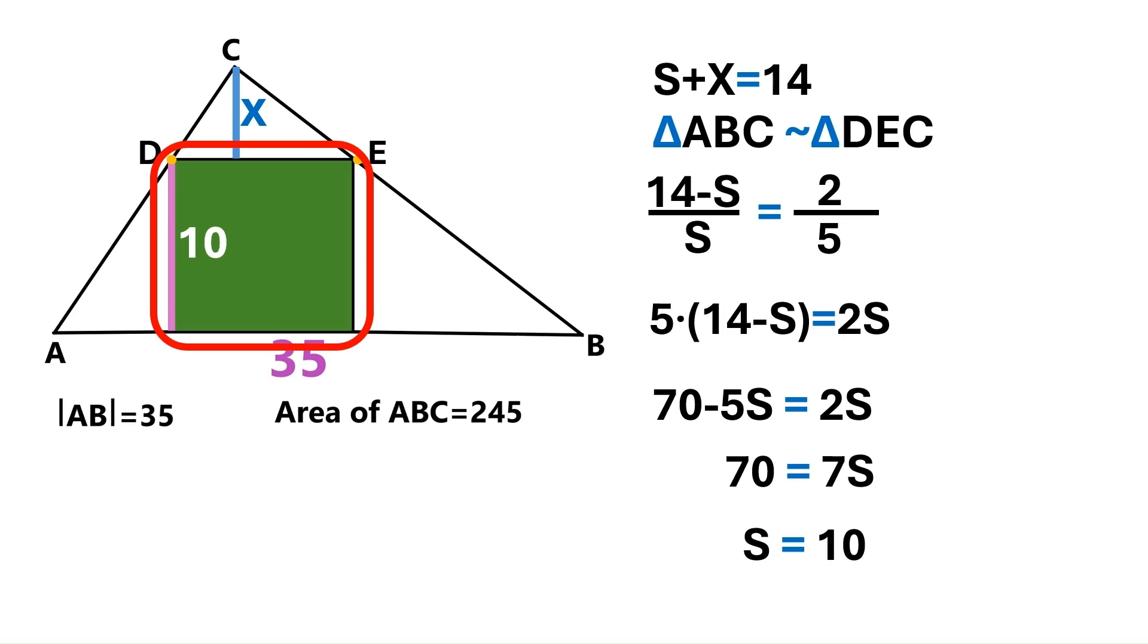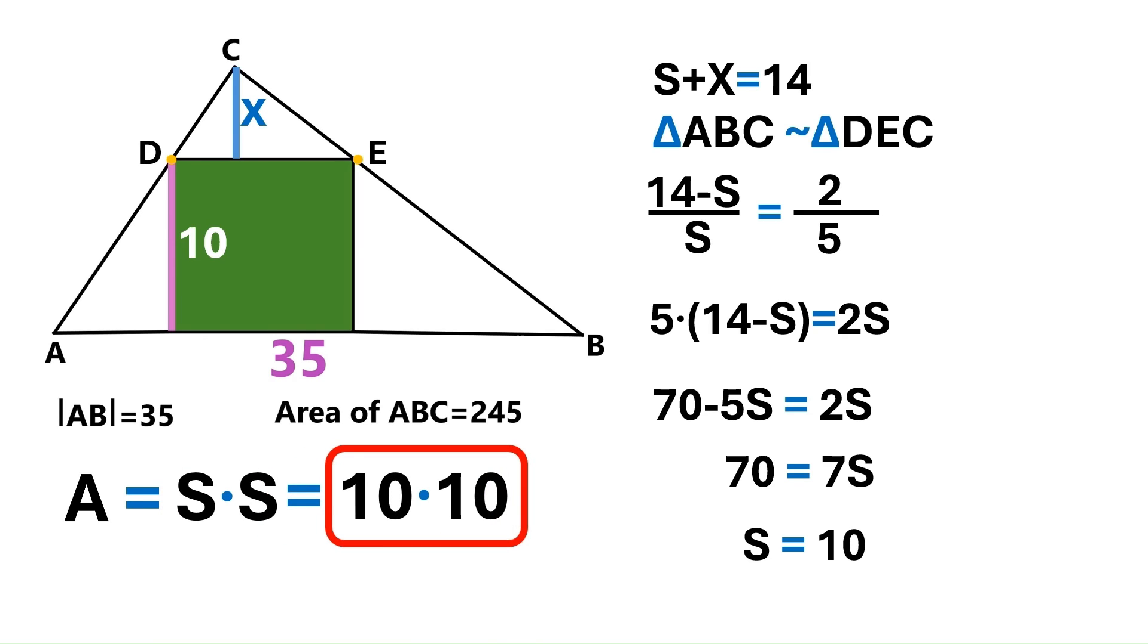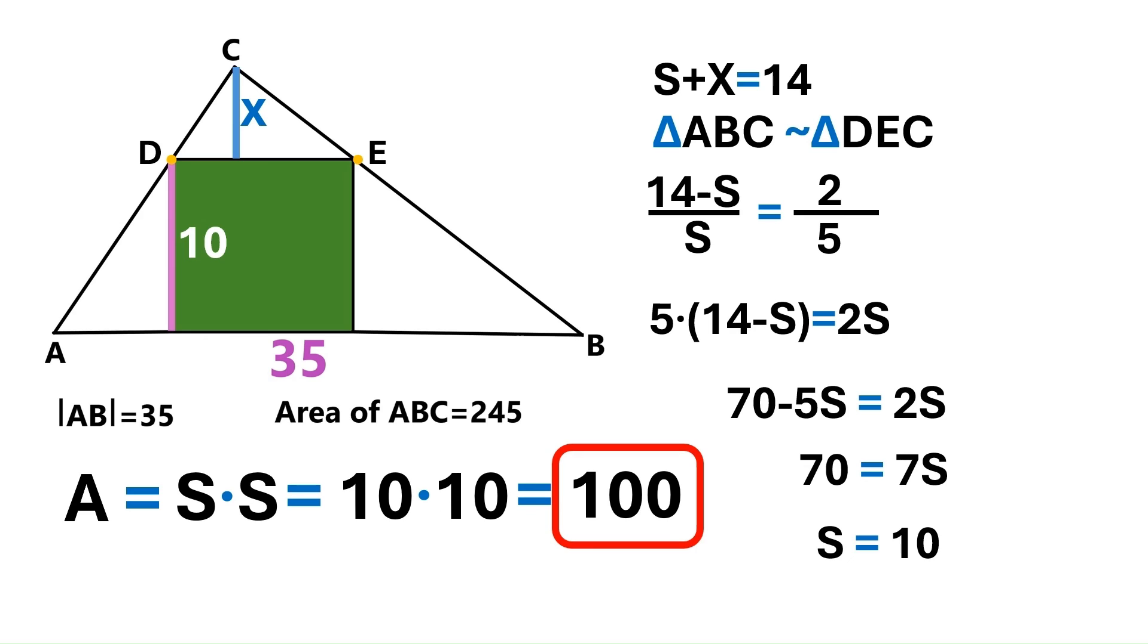One side of this green square is 10. And now I'm going to ask my son to find the area of the green square. Go on son. The side of the square is 10, and we need to multiply the side by itself to find the area of the square. We multiply 10 by 10, and we got 100. That's the area of the green square.